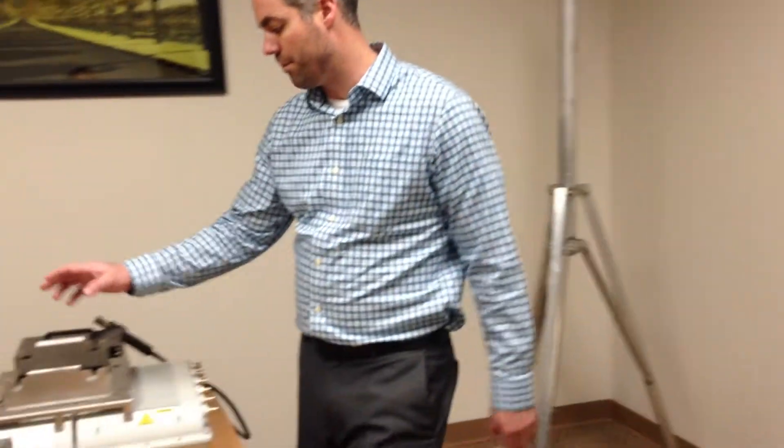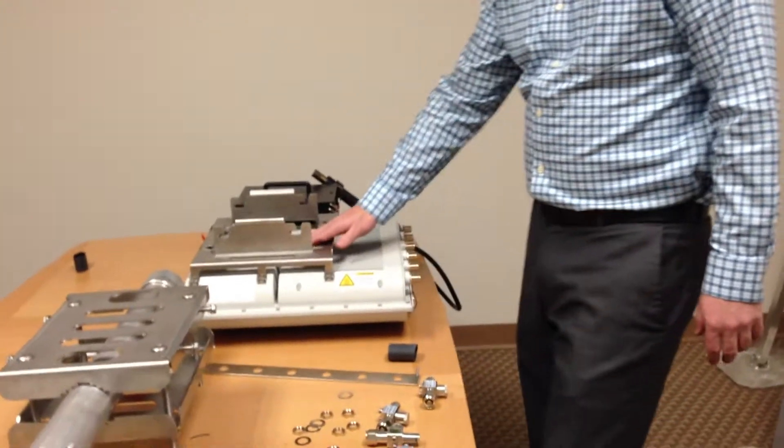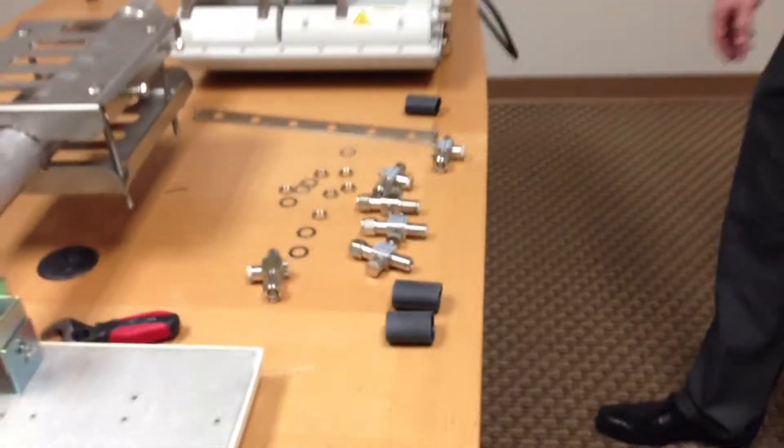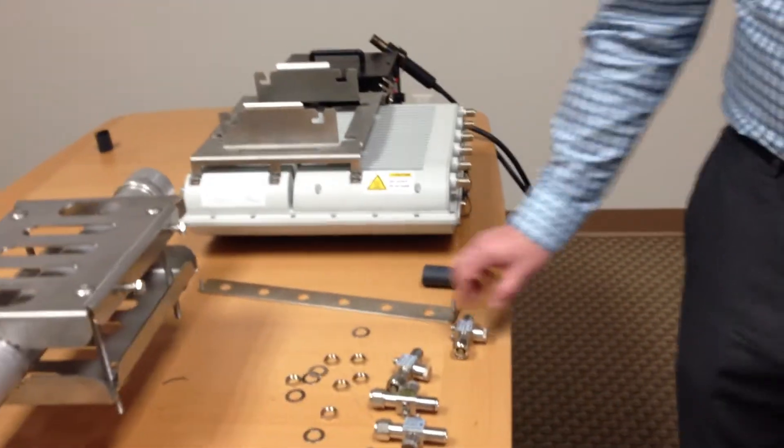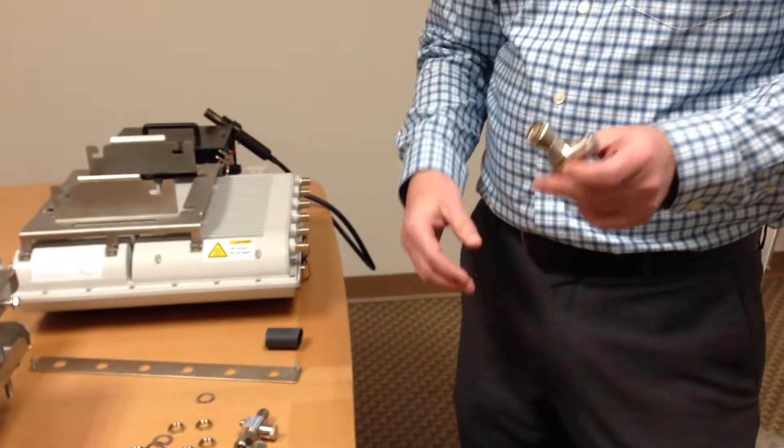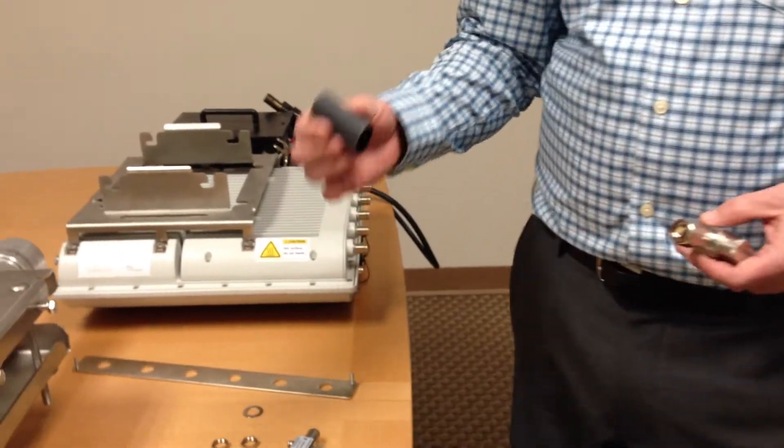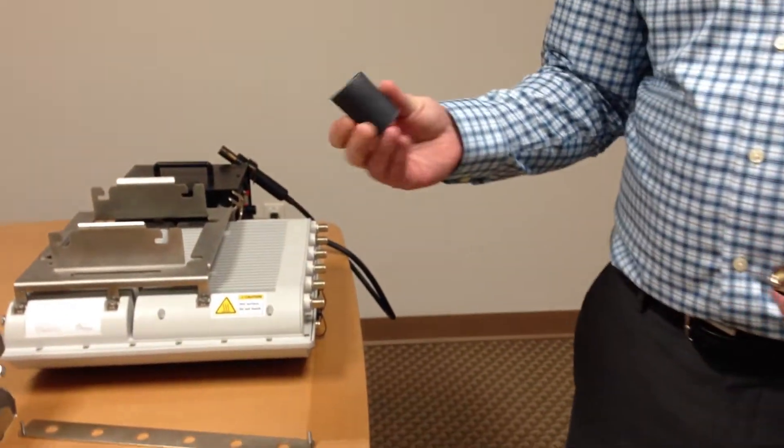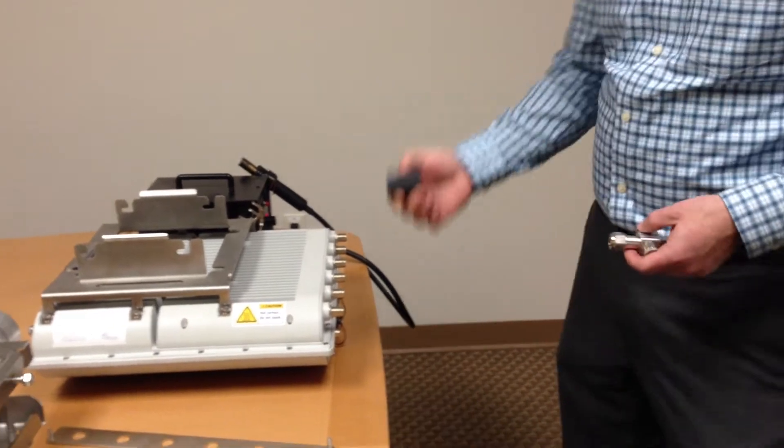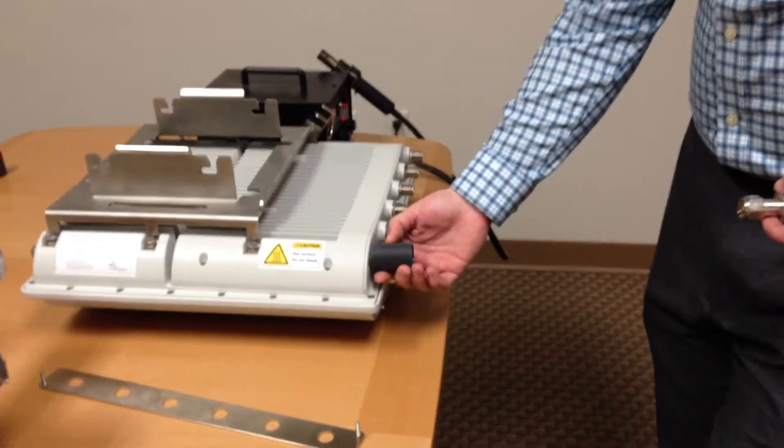The next step after we have our base station mounting bracket installed is to install the RF surge protection kit. So first what we want to do is grab one of our RF surge arrestors and a piece of the heat shrink, and we're going to place the heat shrink over the connector of the RF port.